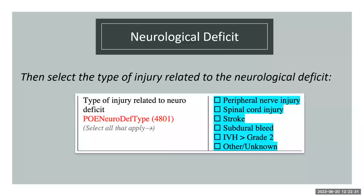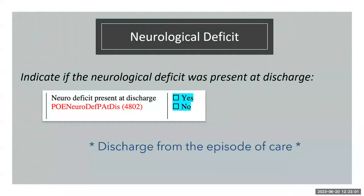Once a neurological deficit is identified during the episode of care, you select the type of injury: peripheral nerve, spinal cord injury, stroke, subdural bleed, IVH greater than grade 2, or unknown reason. You then indicate if the neurological deficit was present at time of discharge from the episode of care, since neurological deficits are followed for the major post-operative event timeframe.